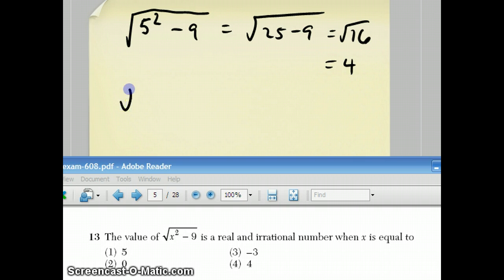If you try choice 2, you get square root of 0 squared minus 9, which is the square root of negative 9, which is 3i, which is imaginary. If you put in negative 3, you get negative 3 squared, which is positive 9 minus 9, which is 0. Square root of 0 is real, but it is rational.